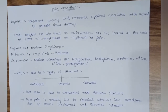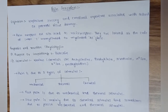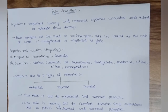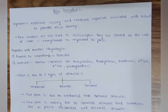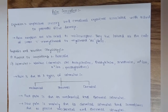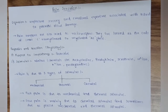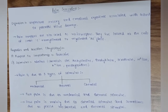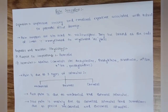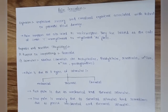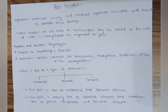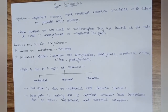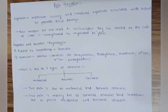Pain receptors are also called nociceptors, located at the ends of small C unmyelinated or mildly myelinated A-delta fibers. Pain sensation is protective in nature because it is non-adaptive. Stimuli include noxious chemicals like acetylcholine, bradykinin, serotonin, H+, K+, and prostaglandins. Pain is due to three types of stimuli: mechanical, thermal, and chemical. Fast pain is due to mechanical and thermal stimuli, and slow pain is mainly due to chemical stimuli.